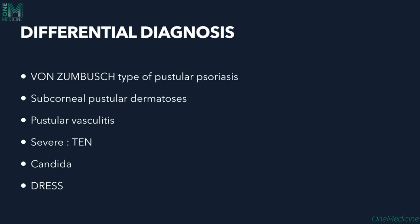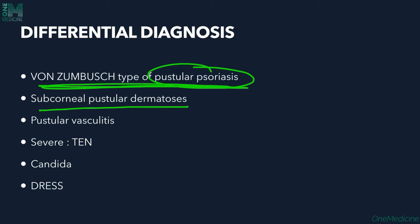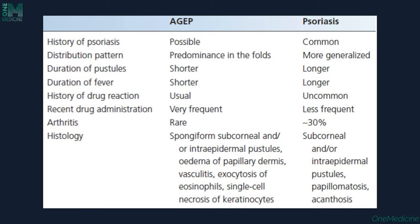The most important differential diagnosis, and most commonly confused with AGEP, is von Zumbusch-type pustular psoriasis. Other differentials include subcorneal pustular dermatosis (Sneddon-Wilkinson disease), which shows a hypopion sign; pustular vasculitis; TEN in severe cases with bullae; candida infection (due to whitish oral mucosal involvement); and DRESS — drug reaction with eosinophilia and systemic symptoms.